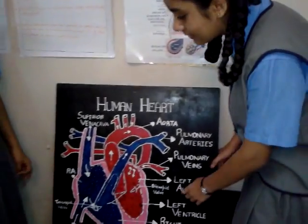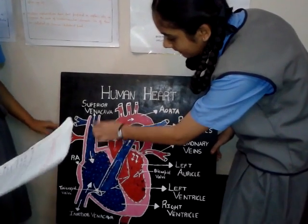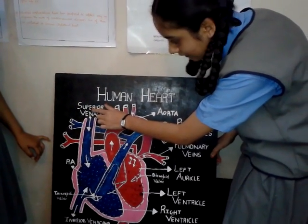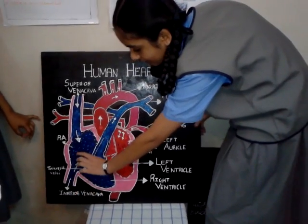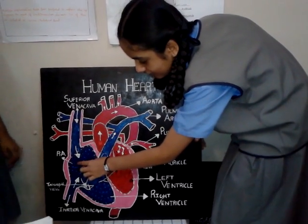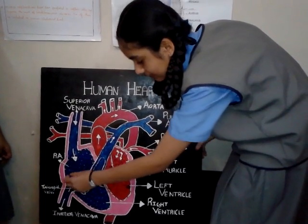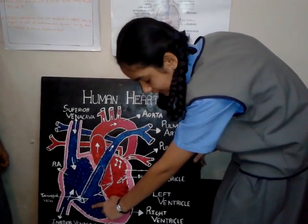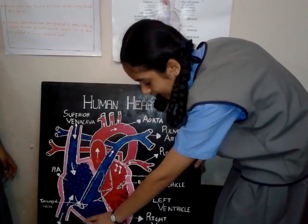The deoxygenated blood enters the right auricle from the upper part of the body through the superior vena cava and the lower part of the body through the inferior vena cava. Once it has entered the right auricle, the right auricle then contracts to push the blood to the right ventricle through the tricuspid valve.